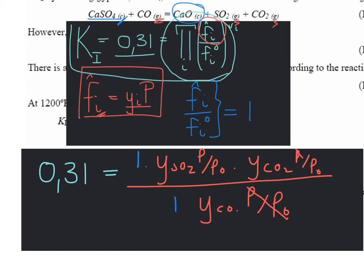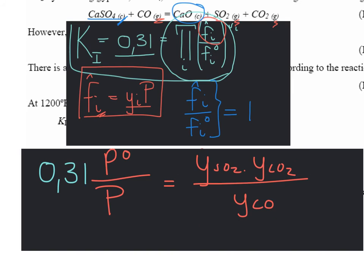After simplifying, we can show the dependence of the equilibrium composition in the mixture with the equilibrium constant at the temperature and the pressure in our reacting vessel.